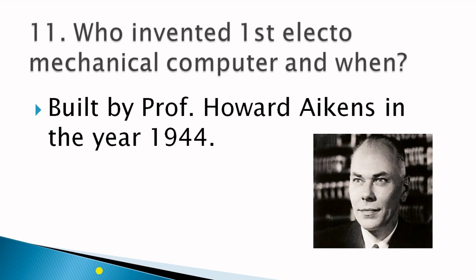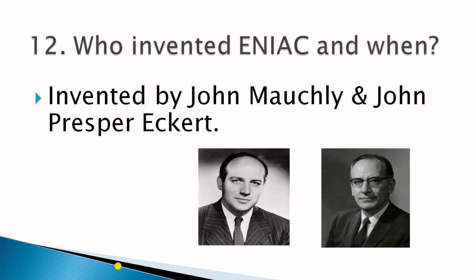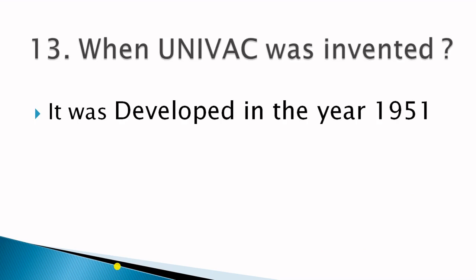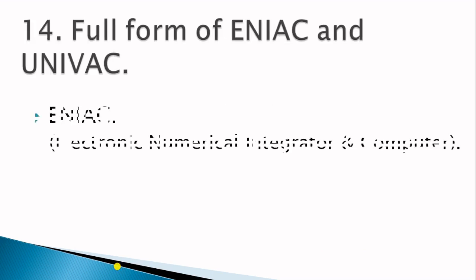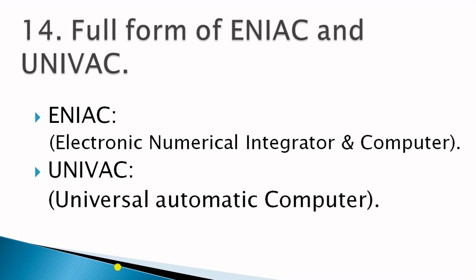From this point, the first generation computers start. Who invented ENIAC and when? It was invented by John Mauchly and John Presper Eckert. UNIVAC was developed in the year 1951. The full form of ENIAC is Electronic Numerical Integrator and Computer, and UNIVAC is Universal Automatic Computer.